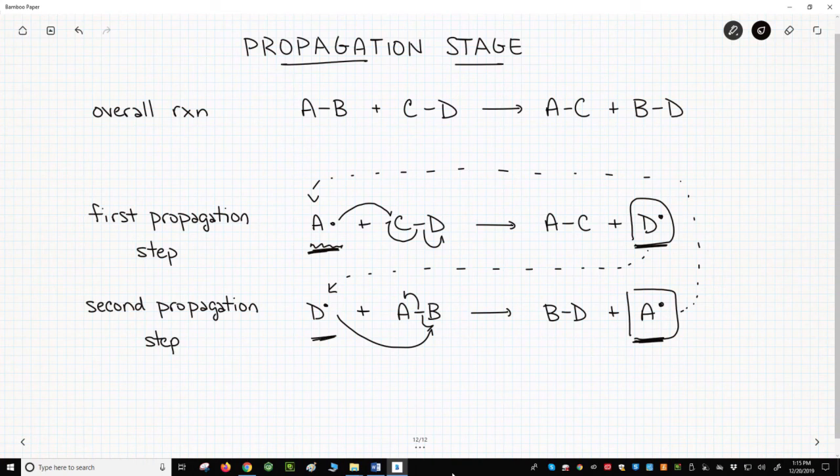If we have written them properly, we can add the two reactions together and get the net reaction. So if we add these together, we can cancel species that appear on both sides of the arrows. That means we can cancel the A radical, which appears as both a starting material and product. We can also cancel the D radical.